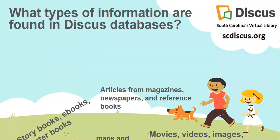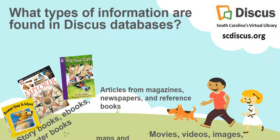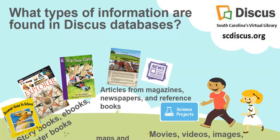What types of information are found in Discus databases? You'll find storybooks, ebooks, chapter books, articles from magazines, newspapers, and reference books, science projects, maps and flags, movies, video images, primary sources, and more.